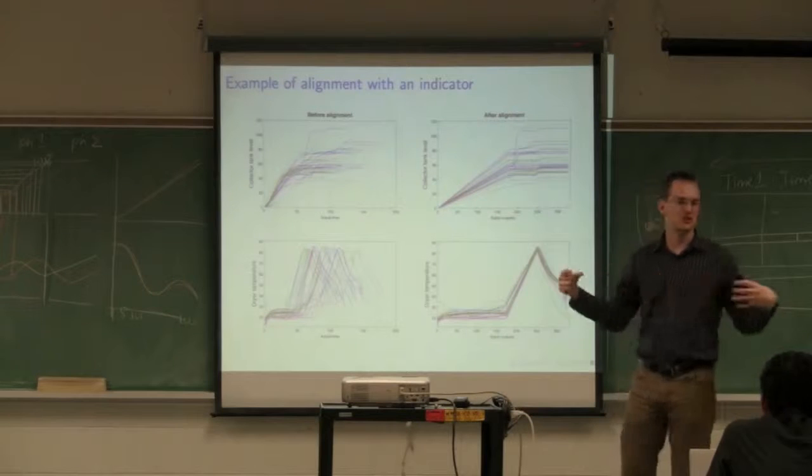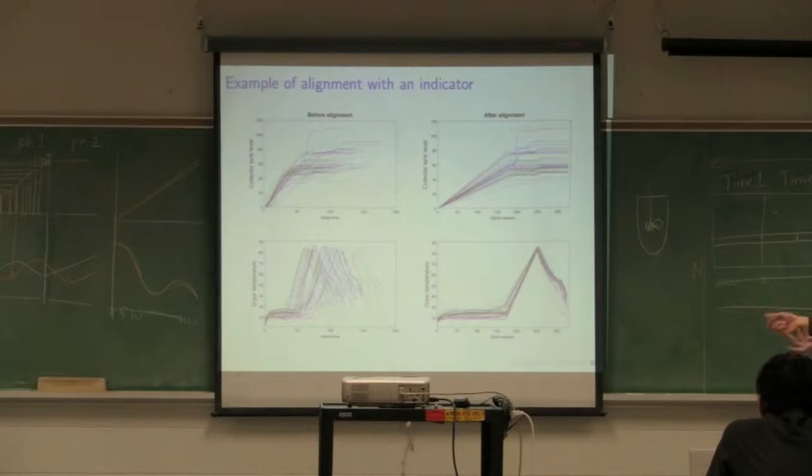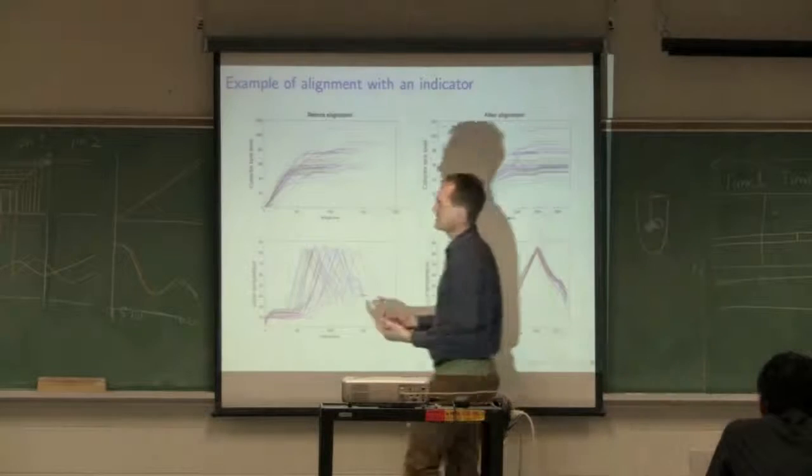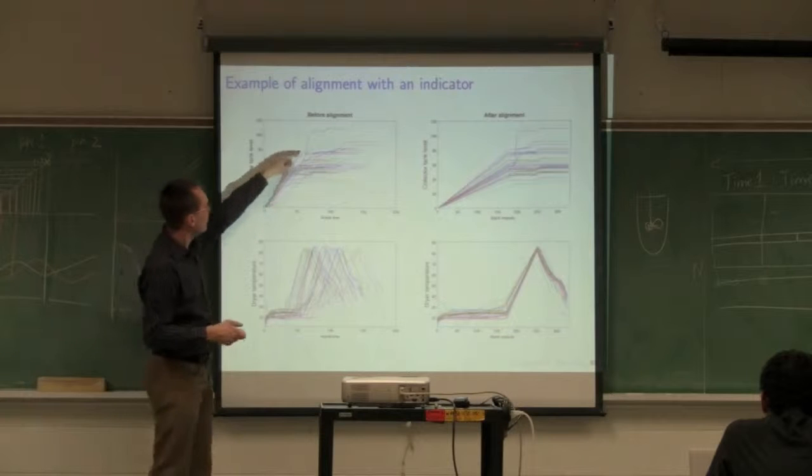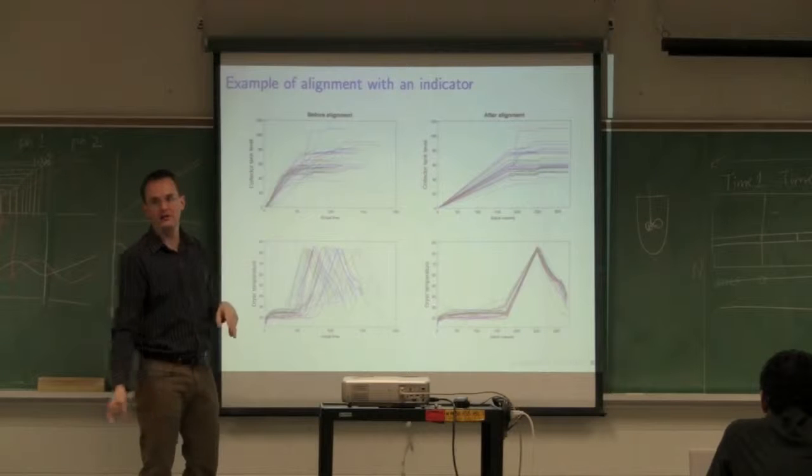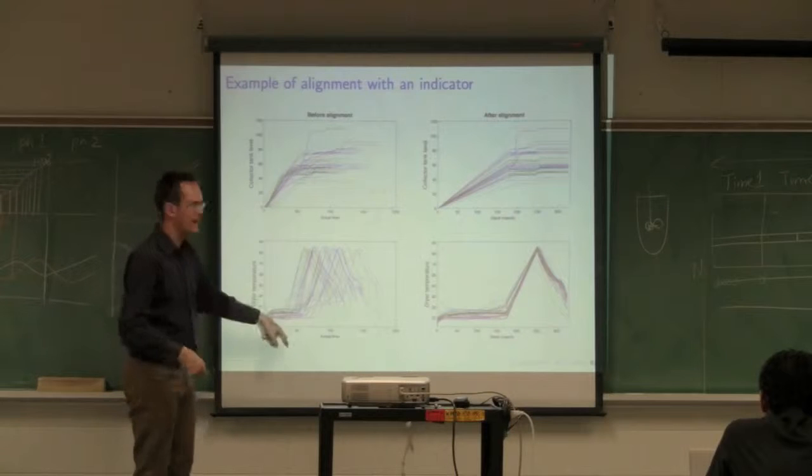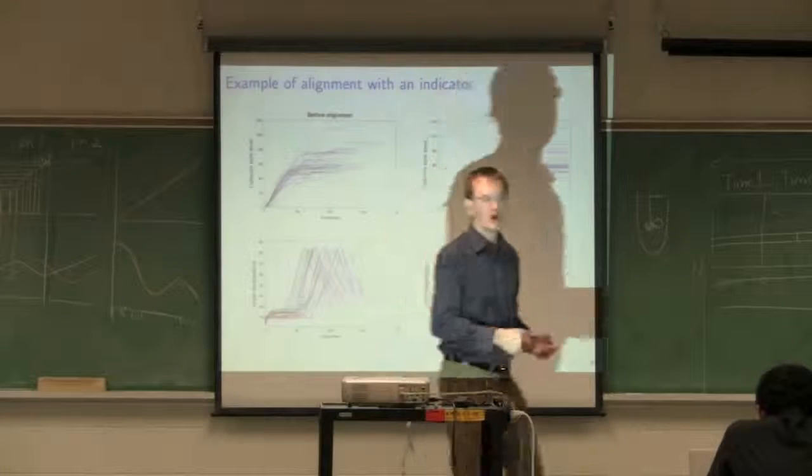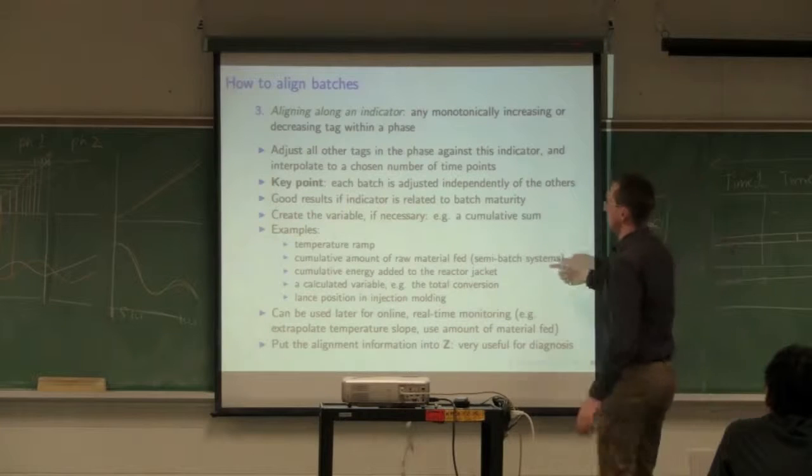In phase one I'm aligning on the collector tank level, which is always going to go up. The collector tank is guaranteed to be an increasing variable. Drier temperature based on the recipe is a ramp that goes up to a peak. A monotonically increasing variable for phase two. And phase three was just interpolated. The key point is we're stretching and shrinking time within a batch. You treat one batch at a time, stretch and shrink one variable, then map that same stretching to all other variables within the batch.